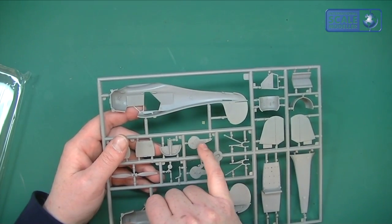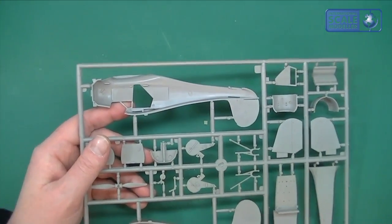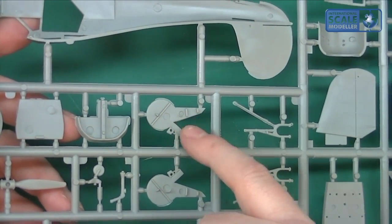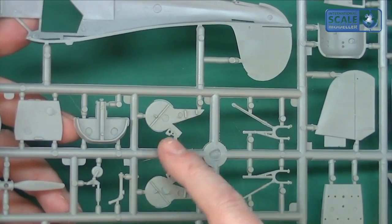That's not nice at all. You've got these ejection pin marks right here in the middle. You can see ejection pin marks inside the wheel well. When you've got the legs down you are going to see that.